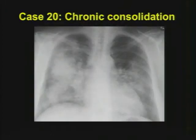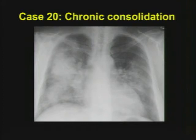Case twenty: a case of chronic consolidation in a patient coming out of a nursing home. Have they started off with a new TB outbreak in a local nursing home? Is this multidrug-resistant TB? Is there some other possibility? What's your differential for chronic consolidation?